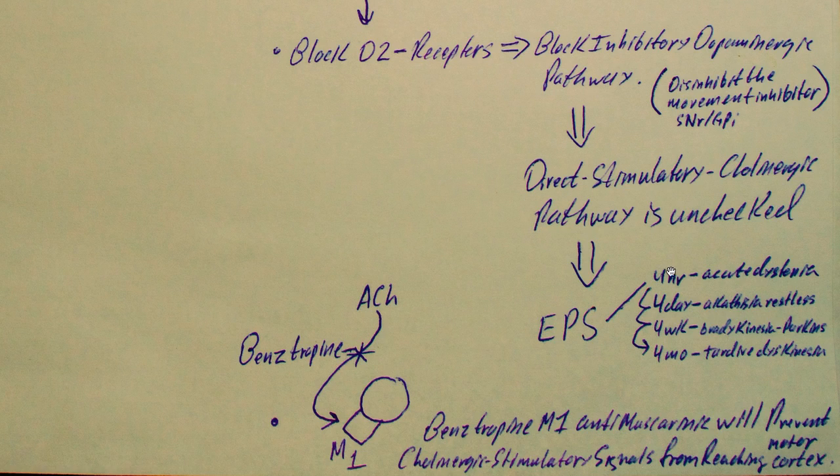Now, they develop in four hours, four days, four weeks, and four months. You get different flavors of EPS. After four hours, you get acute dystonia. Four days, you get akathisia and restlessness. Four weeks, you get bradykinesia and Parkinson's-like symptoms. After four months, you get tardive dyskinesias.